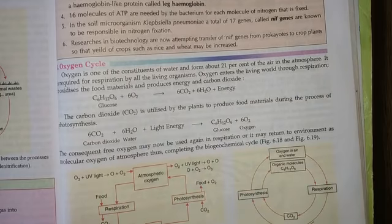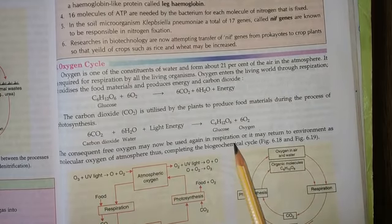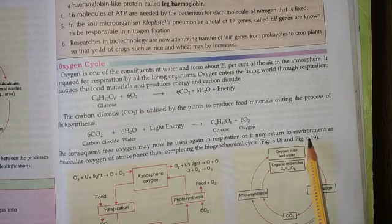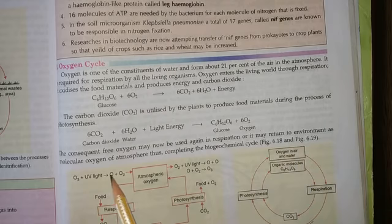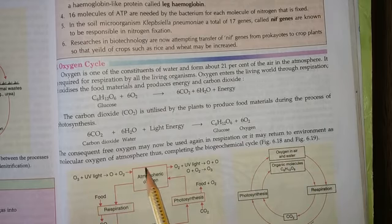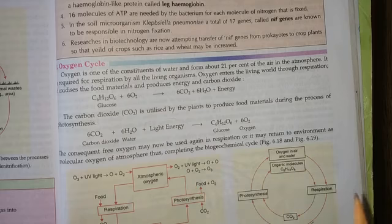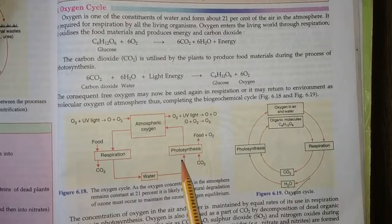This oxygen from plants will be used in respiration and return to the environment as molecular oxygen of the atmosphere. So biogeochemical cycle is going on and it depends on two basic processes: respiration and photosynthesis.